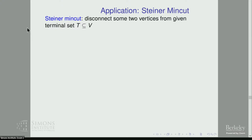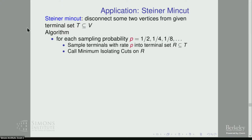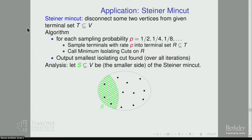Recall the Steiner min cut problem: we just want to disconnect some two given terminals from each other. Here's the algorithm. We sample over geometrically decreasing probabilities — one half, one fourth, and so on. For each sampling probability, we independently sample each terminal into a new terminal set R. So we have our original terminal set T, and for each terminal we independently sample it into R with rate p. We then call min isolating cuts on R. The primitive gives us a bunch of cuts over each sample, and we output the smallest isolating cut found over all these trials.